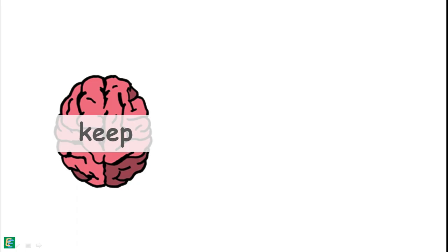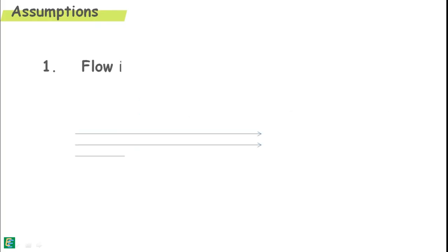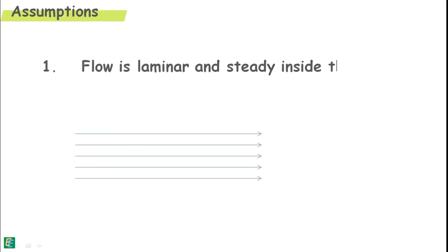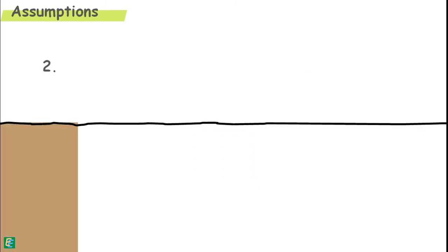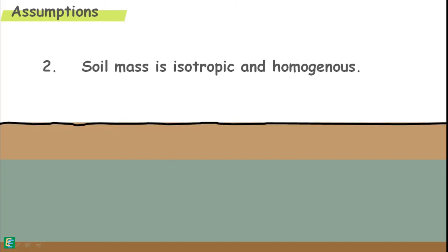We should keep in mind that in obtaining this value of permeability of the soil, we have assumed certain things. First, we assumed that the flow is laminar and steady inside the soil. Second, we assumed that the soil mass is isotropic and homogeneous.